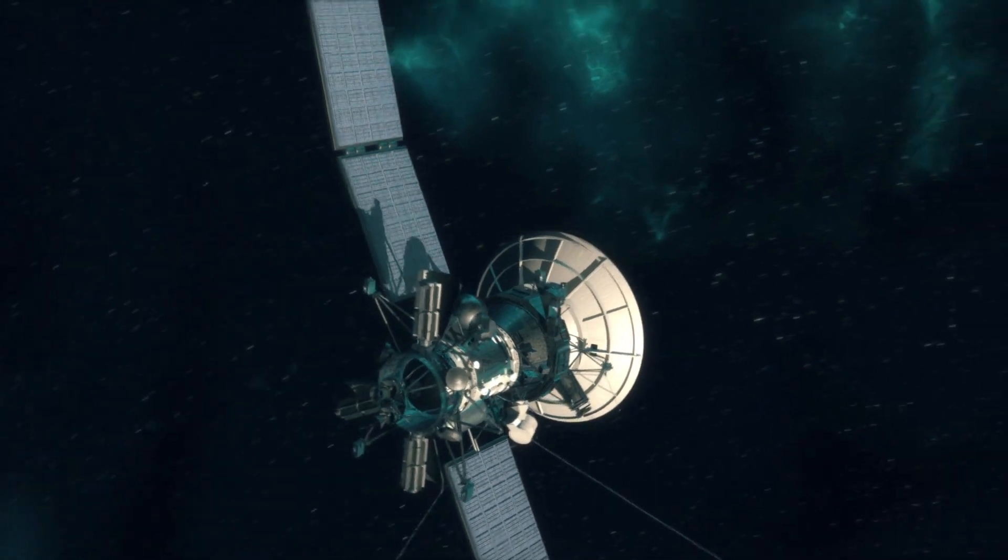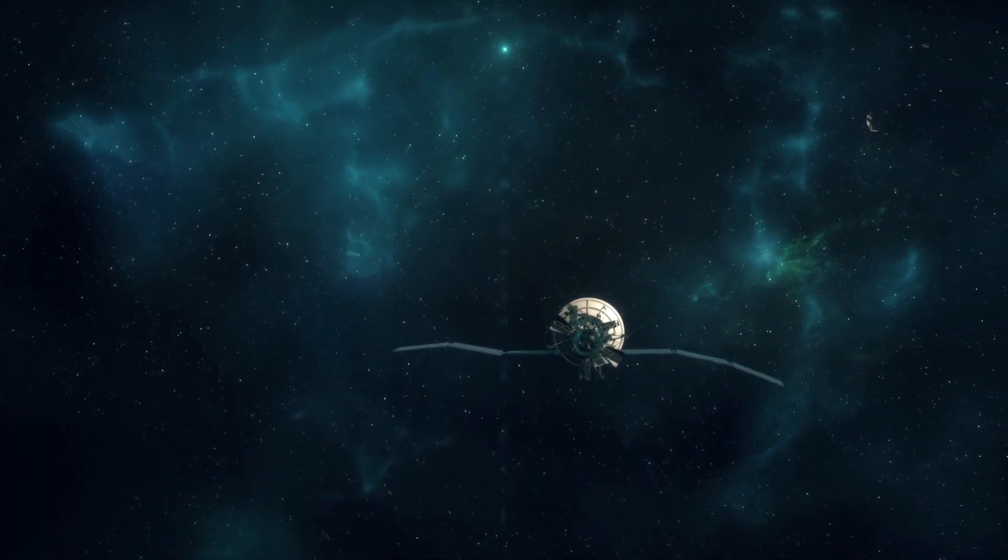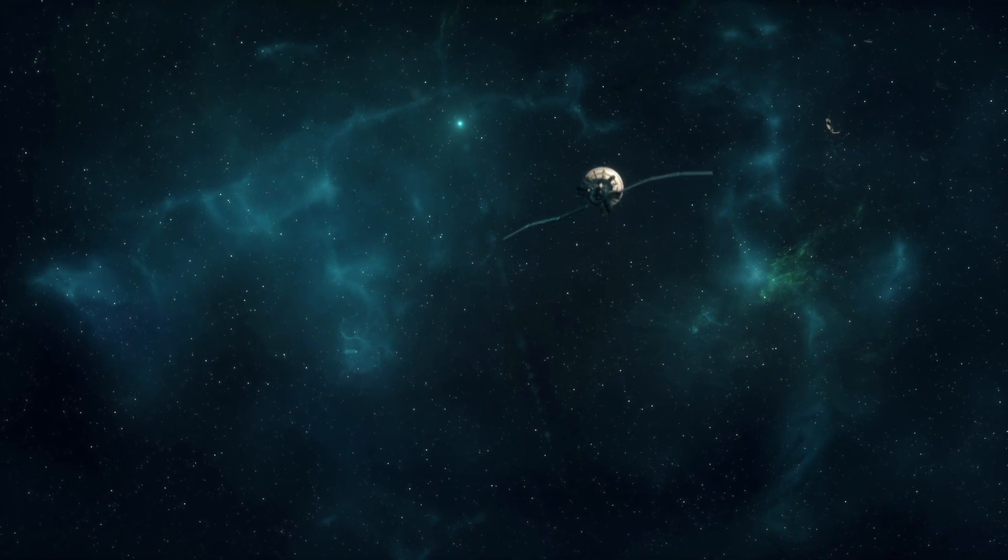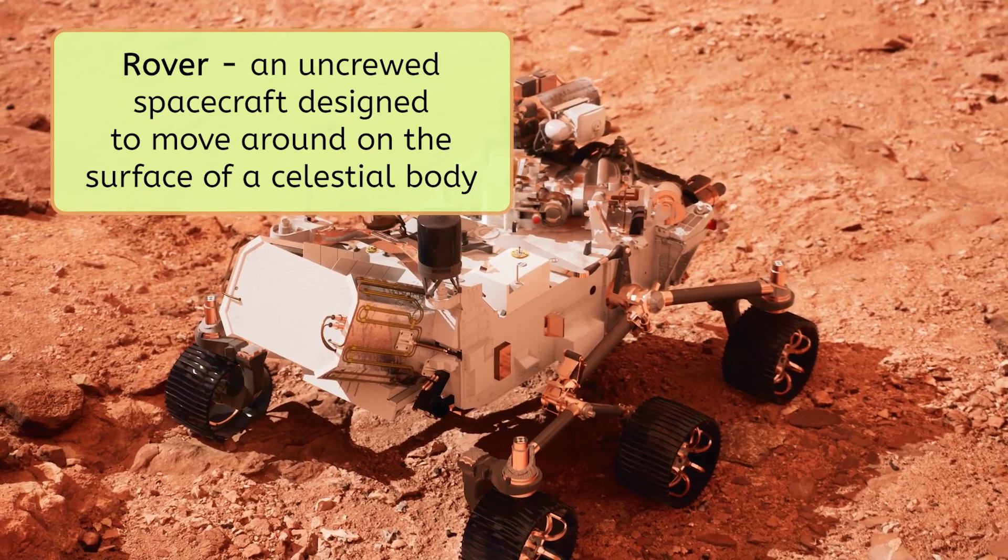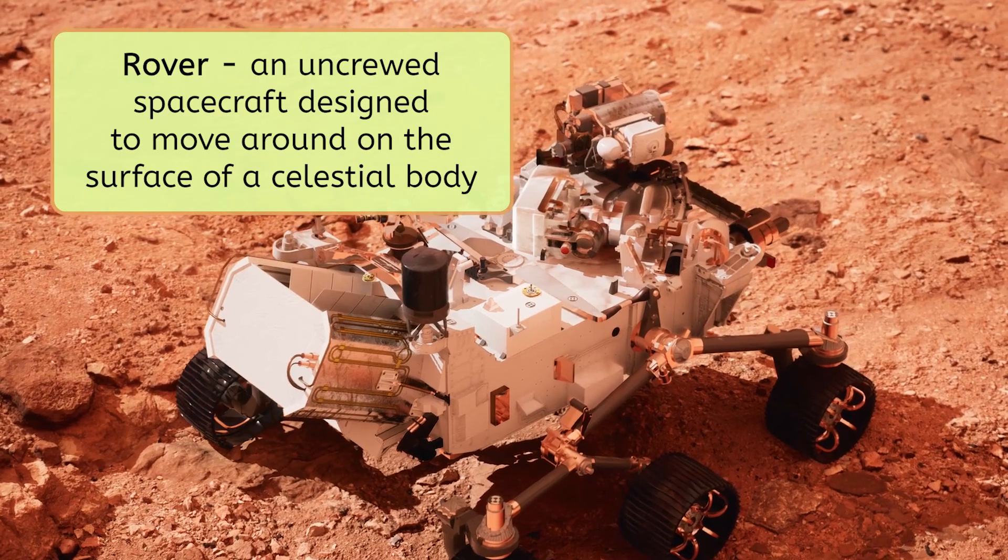But, what about when we want to take a closer look at a celestial body instead of just flying past or orbiting it? That's where rovers come in. A rover is an uncrewed spacecraft designed to move around on the surface of a celestial body.